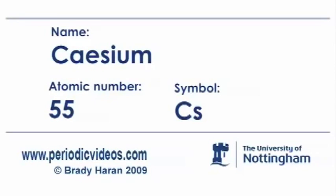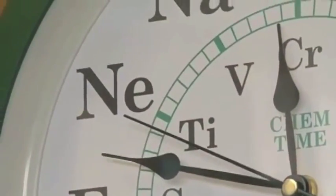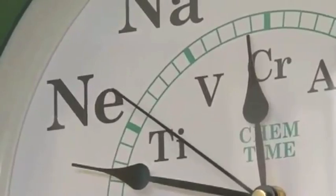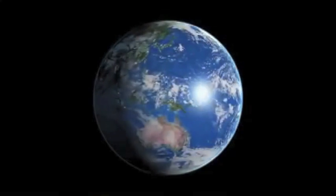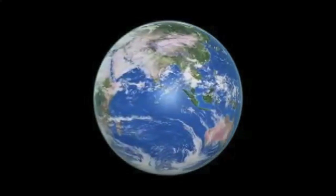Cesium has quite a surprising use — it's used to measure time. You could define one second as a fraction of a day: one sixtieth of a minute, which is a sixtieth of an hour, which is a twenty-fourth of a day. But the trouble with that is you'd never be able to tell whether the Earth was going slower or speeding up, because the length of the day would change and you wouldn't notice it.